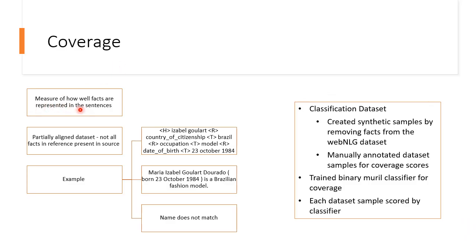Coverage is a measure of how well facts are represented in the sentences. This is an important measure since X-Line is a partially-aligned dataset, as not all the facts in the reference are present in the source, as can be seen in the example here. For this, a dataset was constructed by removing facts from the dataset and then manually annotating these samples for coverage scores. Next, a coverage classifier was trained on this dataset and each example in our dataset was scored using this classifier.